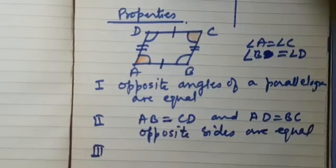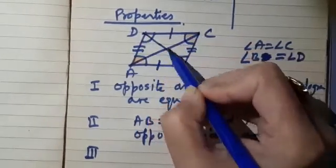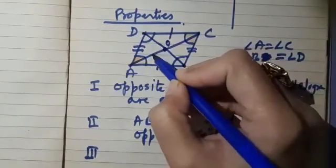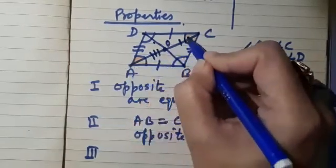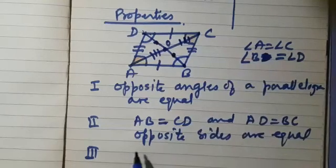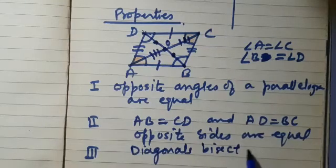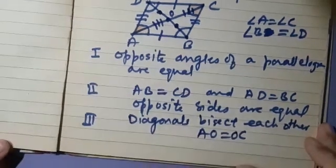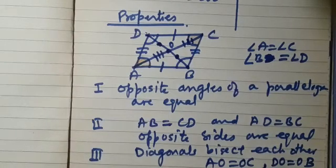The third property is related to diagonals. When we draw the diagonals, they intersect at point O. In a parallelogram, the diagonals bisect each other: AO equals OC and DO equals OB. Write down — diagonals bisect each other. We will use all these properties for solving questions.